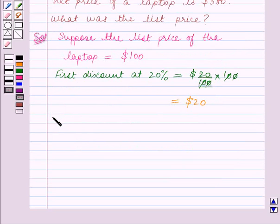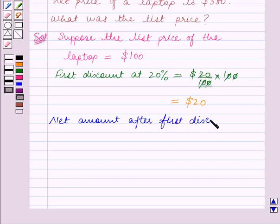So the net amount after first discount is equal to the list price, that is $100, minus the first discount, that is $20. This is equal to $80.